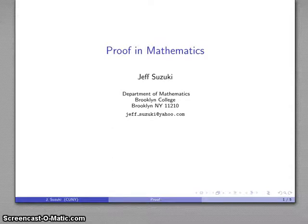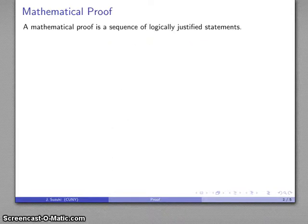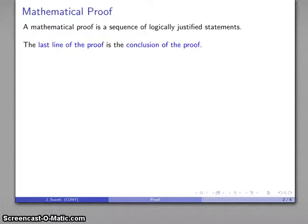From time to time you'll be asked to prove something in mathematics. Let's talk a little bit about proof in mathematics. A mathematical proof is a sequence of logically justified statements. That doesn't really tell us anything, but the important idea is that because it's a sequence, it has a last line, and that last line is the conclusion of the proof.